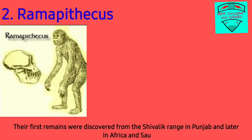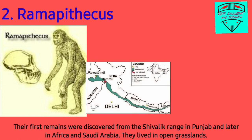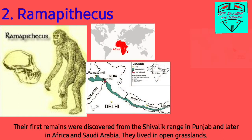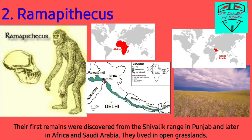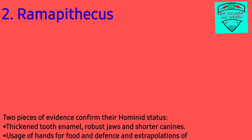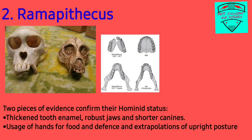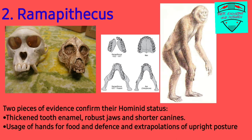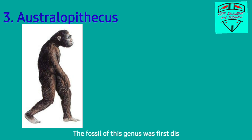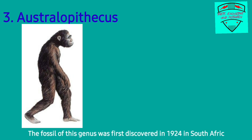The second stage is Ramapithecus. Their first remains were discovered from the Shivalik Range in Punjab and later in Africa and Saudi Arabia. They lived in open grasslands. Two pieces of evidence confirm their hominid status: thickened tooth enamel, robust jaws, and shorter canines, as well as usage of hands for food and defense, and extrapolations of upright posture.